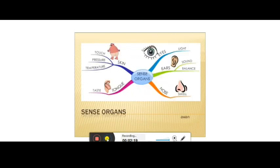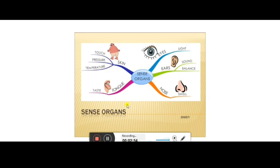Neurons are found in all your sense organs. In the skin, they help you feel touch, pressure, and temperature. In the tongue, they help you taste things. In the eyes, they give the sense of vision. In the ears, they help with sound and balance. Through the nose, they help you smell. All sense organs contain neurons or nervous tissue.